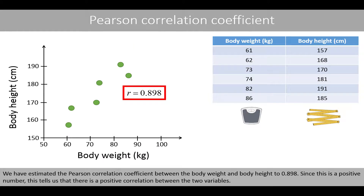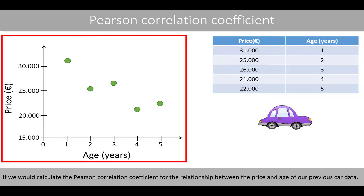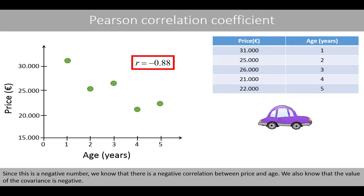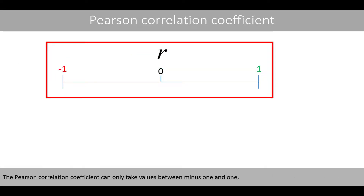We estimated the Pearson correlation coefficient between body weight and body height to be 0.898. Since this is a positive number, this tells us that there is a positive correlation between the two variables. If we calculate the Pearson correlation coefficient for the relationship between the price and age of our car data, the value of r would be computed to minus 0.88. Since this is a negative number, we know that there is a negative correlation between price and age, and the covariance is negative.